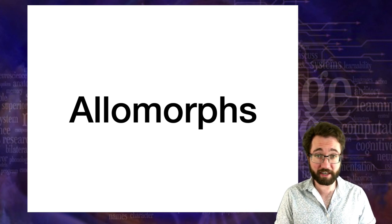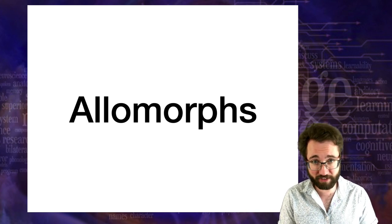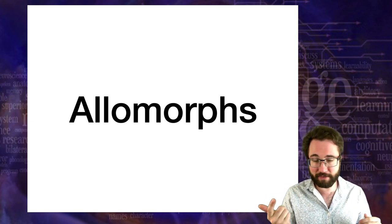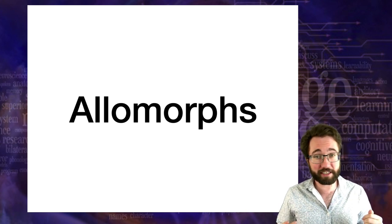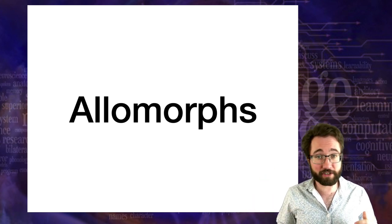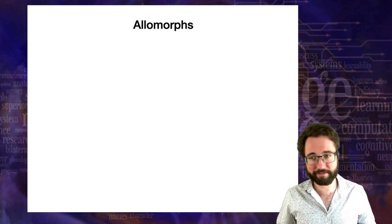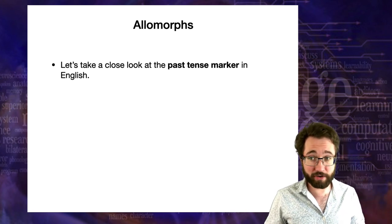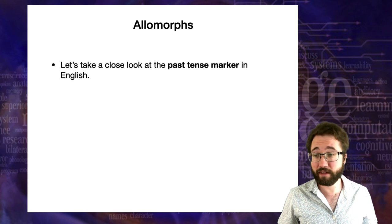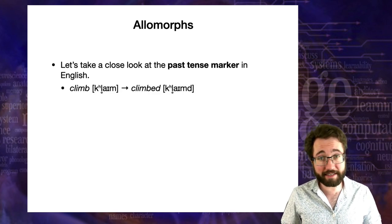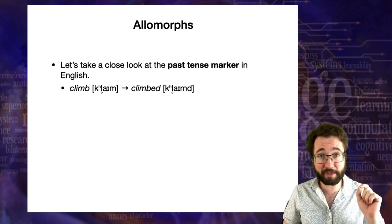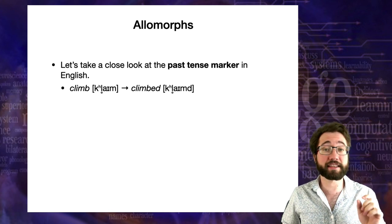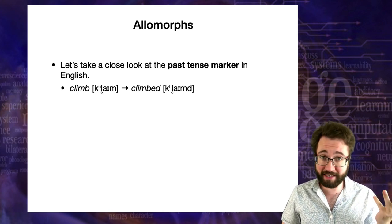That's enough review — now let's talk about something new: allomorphs. You might be remembering phonology, where we had phonemes and allophones. Now, in morphology, we've already talked about morphemes, so now we're going to talk about allomorphs. Let's take a close look at the English past tense marker to introduce this idea. We're looking at past tense as it appears phonetically — be careful not to be misled by the spelling.